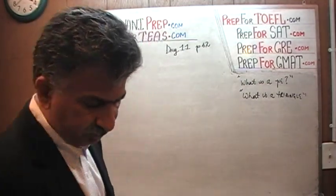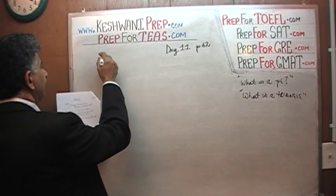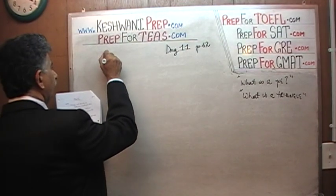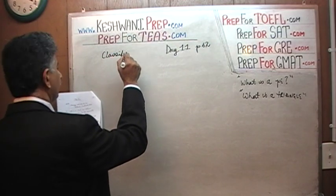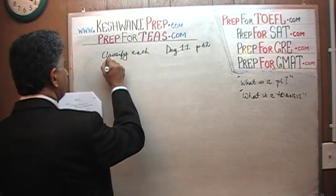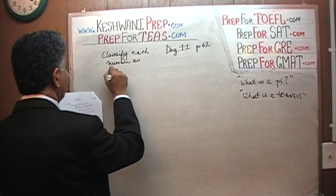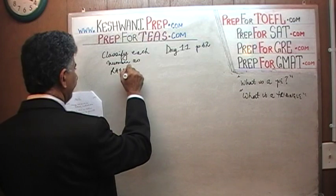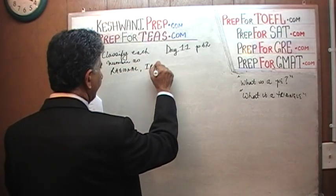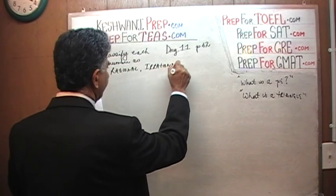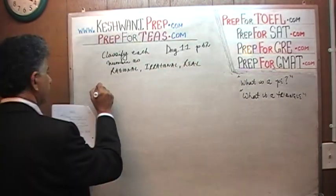Okay, so exercises — practice problems on page 62. It says: classify each of these numbers as rational, irrational, and real numbers. The very first one they gave us is the root of 36.